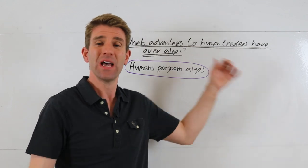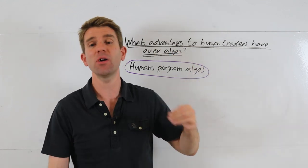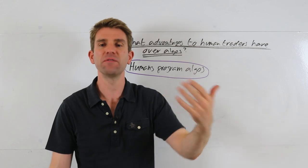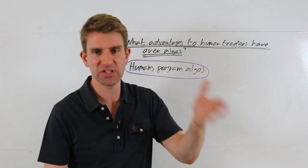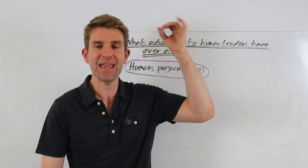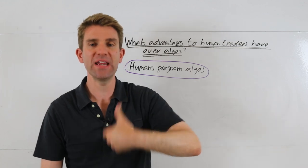Okay, so what advantages do human traders have over algos? Let's just quantify algos. I don't mean algos as in an algo that's trading a specific VWAP trade or something that's actually placing an order. Algos as in a strategy that's trading for you, so a machine if you like that's sitting there and trading.